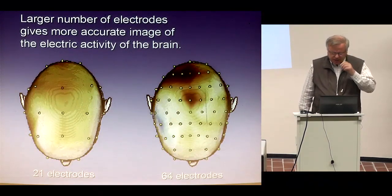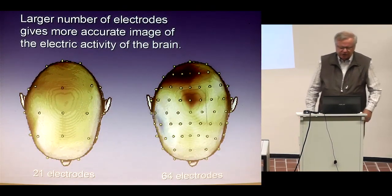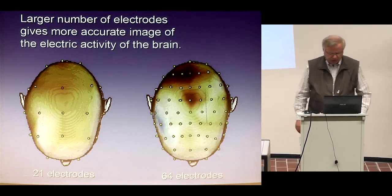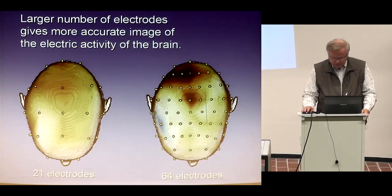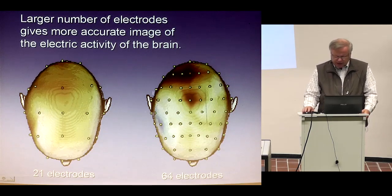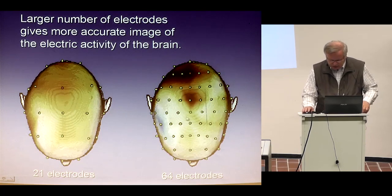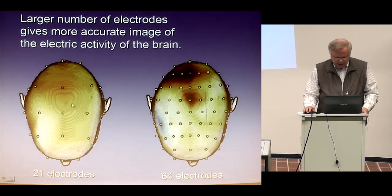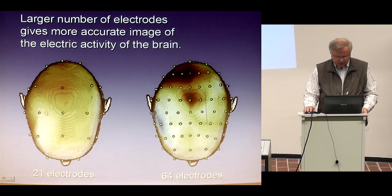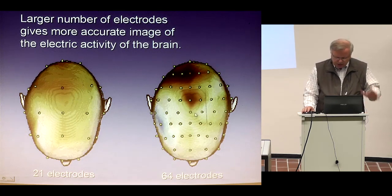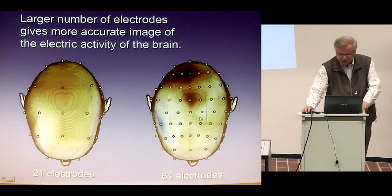The larger the number of electrodes in the EEG system, the more accurate the image of the electric activity of the brain. Here, 64 electrodes were recorded and the distribution of the electric field on the scalp was calculated. Then only 21 electrodes were extracted and from those signals it is possible to calculate the distribution of electric activity. The more electrodes, the more accurate the image of the electric field on the scalp — nothing too difficult.